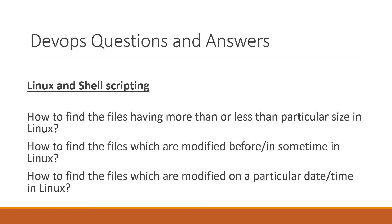In this video, we will see how to find files having more than or less than a specified size in Linux. For example, we will try to find files having more than 1GB, 2GB, 1MB, 2MB, 1KB, 2KB, etc. We will also see how to find files having less than a specified size, how to find files modified before or within some time period, and how to find files modified on a particular date or time in Linux. Let us start.